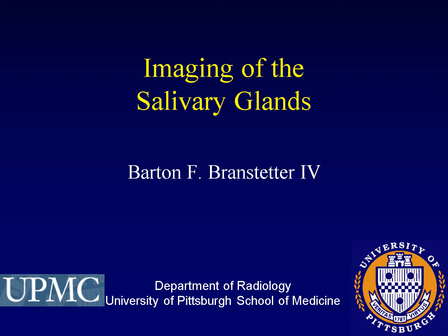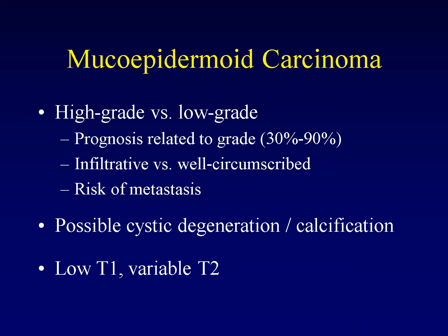This is part three of the lecture on imaging of the salivary glands. On to the malignancies: mucoepidermoid carcinoma. This common malignancy comes in two different types, high grade and low grade. The prognosis of the tumor is closely related to the grade of tumor. Five-year survival is 90% for low grade tumors versus a mere 30% for high grade tumors.